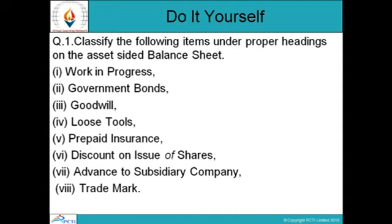Do It Yourself — Question 1: Classify the following items under the proper headings on the asset side of the balance sheet: (1) Work in progress, (2) Government bonds, (3) Goodwill, (4) Loose tools, (5) Prepaid insurance, (6) Discount on issue of shares, (7) Advance to subsidiary company, (8) Trademark. That concludes session number 16. Thank you.